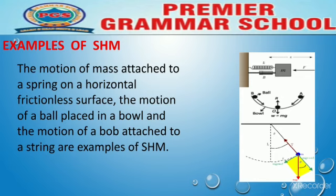ایک bob کوئی ہو، وہ کسی string کے ساتھ attach کر دیں اور اسے اپنی mean position سے کسی highest point یا کسی بھی point پر displace کر دیں۔ پھر وہ اپنی mean position کے ارد گرد up and down، left اور right، back and forth motion کرے گا۔ اس motion کو بھی ہم simple harmonic motion کا نام دیں گے۔